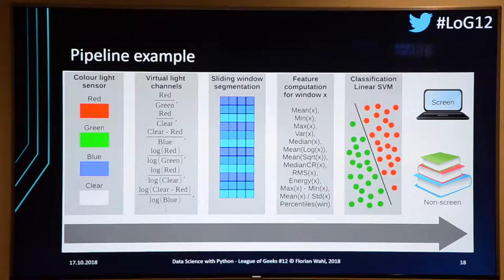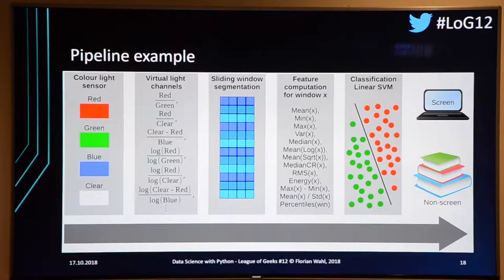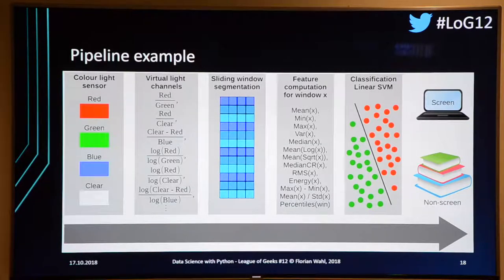Here's an example pipeline from one of my research papers. I used eyeglasses with a color sensor embedded in the lens that measures separate light intensity for red, green, and blue. I built features I call virtual light channels — for example, red light divided by green light. Then I applied sliding window segmentation, splitting data into small time windows and computing features like mean and variance — ending up with 725 features, at which point feature selection becomes important.